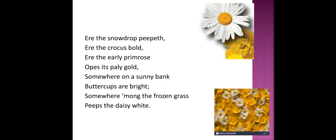In the next second stanza: here the snowdrop peeped, here the crocus bold. Snowdrop means the drops from the stones are falling. Crocus bold means that it is a flower. Here the early primrose opens its pale gold. The primrose also opens its pale gold.